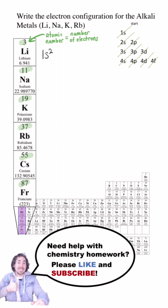Lithium has 3 electrons: 1s2, 2s1. Sodium has 11 electrons: 1s2, 2s2, 2p6, 3s1. Potassium has 19 electrons: 1s2, 2s2, 2p6, 3s2, 3p6, 4s1.